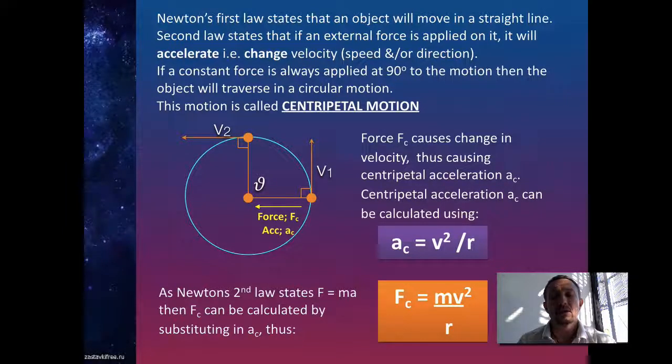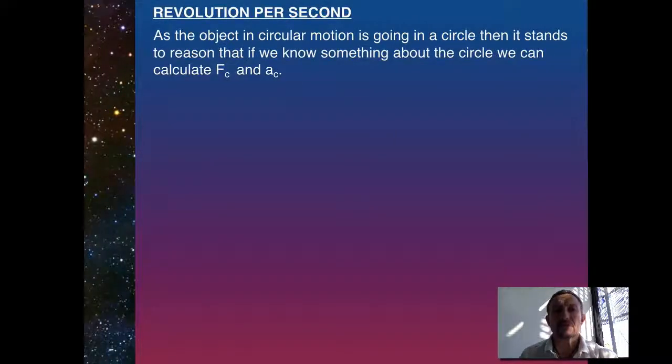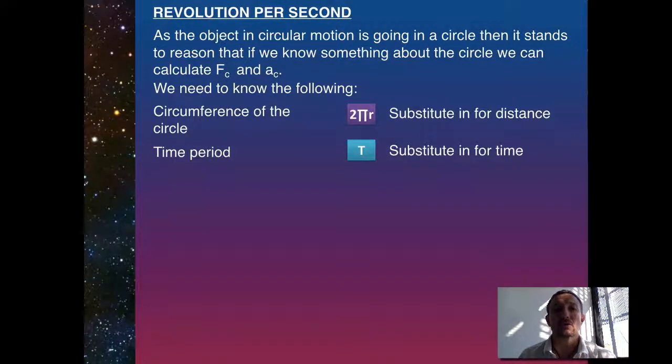But it doesn't just stop there. We also know about revolutions per second. So let's look at revolutions per second with respect to applying them into our centripetal force and centripetal acceleration models. Now, we know that in order to work out the circumference of a circle, we've got 2 pi R.